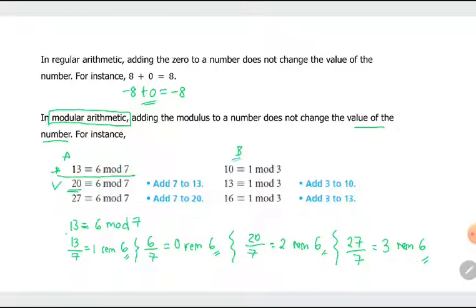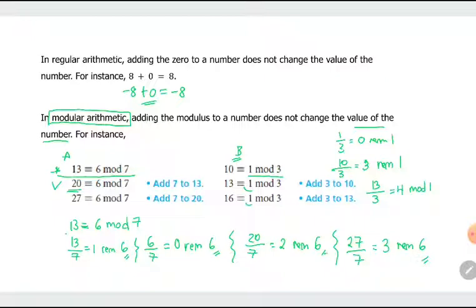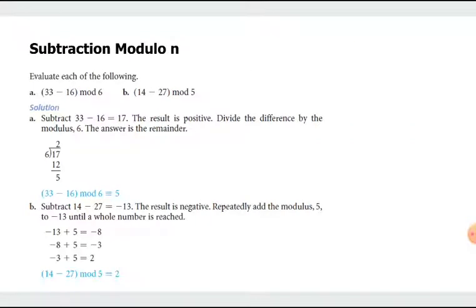So that's the property in modular arithmetic: if you add the modulus to a number, it will not change the value of that number. Now, why are we talking about this? Because this will be useful in subtraction modulo n. There are two cases in subtraction: one is if you get a positive result, and the other is if you get a negative result.